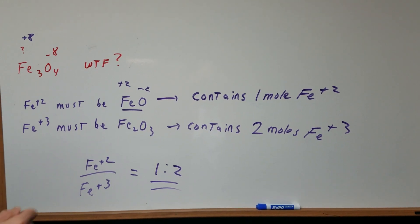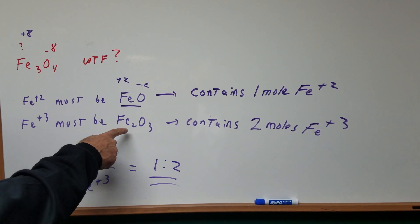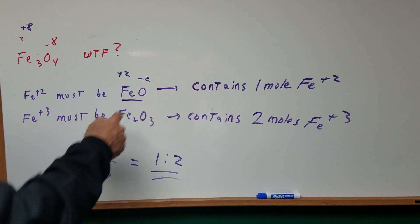How would we get Fe+3? Well that would be Fe2O3, because if you crisscrossed it you would see that that would give you Fe+3.